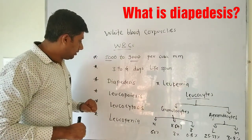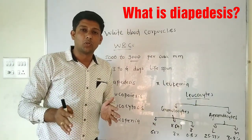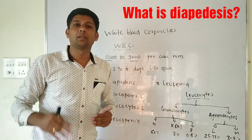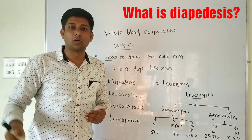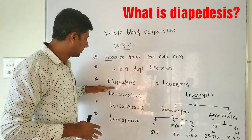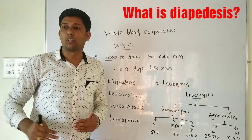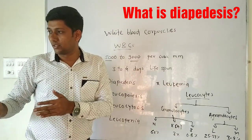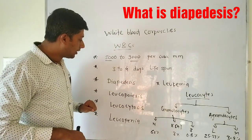As discussed earlier, WBCs show amoeboid movement. Due to this amoeboid movement, they squeeze out of the blood capillaries through the process of phagocytosis. This squeezing out of WBCs out of the capillaries is called diapedesis. So, diapedesis is the squeezing of WBCs out of the capillaries due to their amoeboid movement.